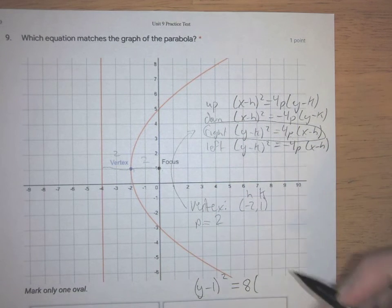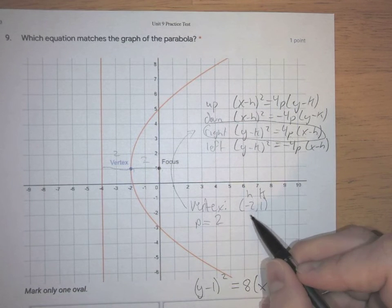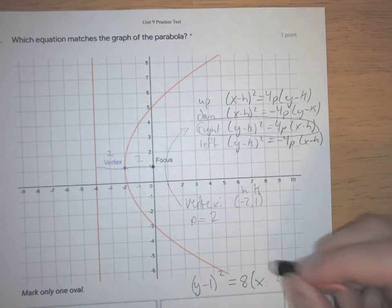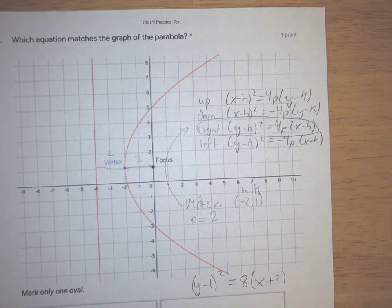And then (x-h). So x minus h, so x minus negative 2, x minus negative 2, that's going to change into x plus 2.